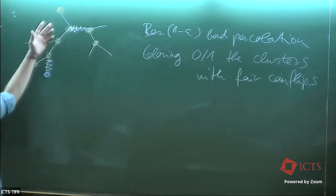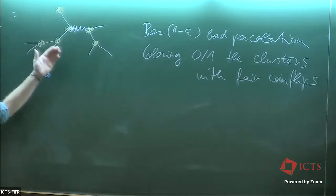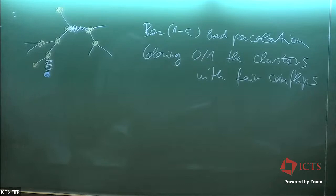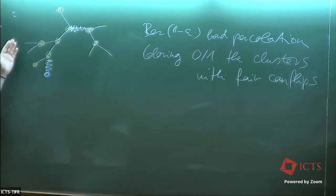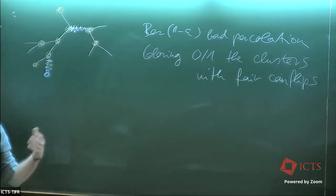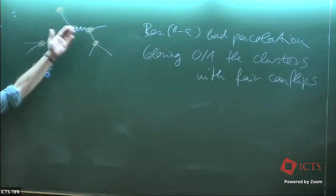As epsilon goes to zero, this is getting locally constant. If it's ergodic, then with ergodic measures we are converging to: with probability half all orange, with probability half all blue. That would show that this is not Kazhdan. How do we show that this is ergodic?